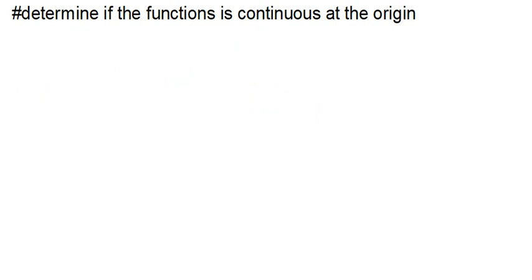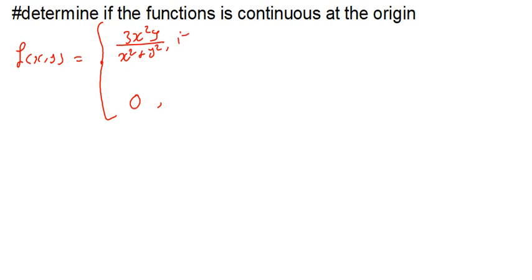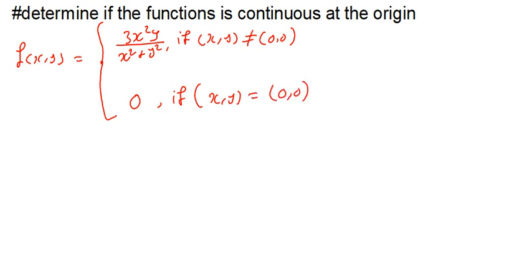Let's look at some examples. Say we are given f(x, y) in piecewise form: 3x²y divided by x² + y², when (x, y) ≠ (0, 0), and 0 when (x, y) = (0, 0). After evaluating at (0, 0), we get 0 — so the evaluation is already done for us. We just need to determine the limit and see if the answer matches.